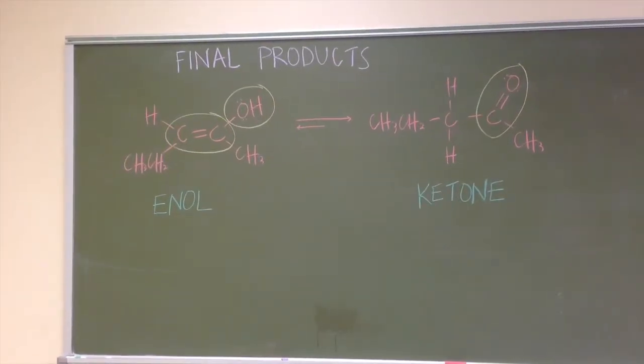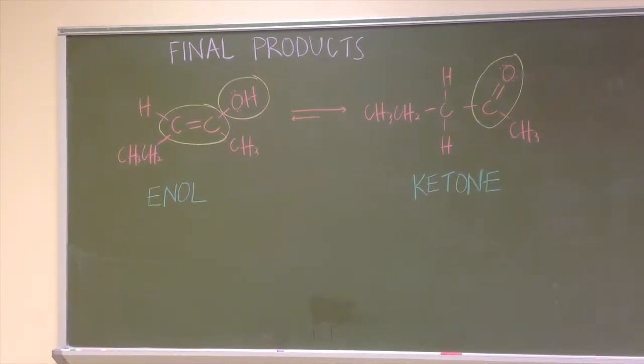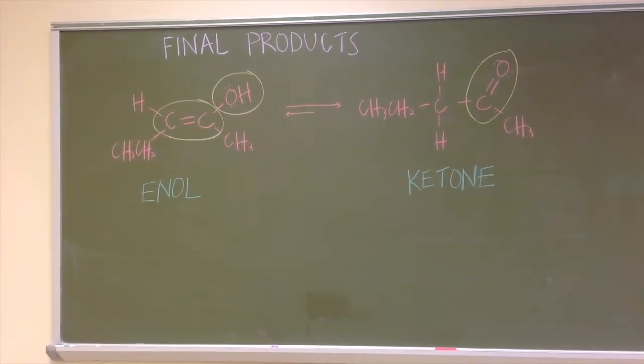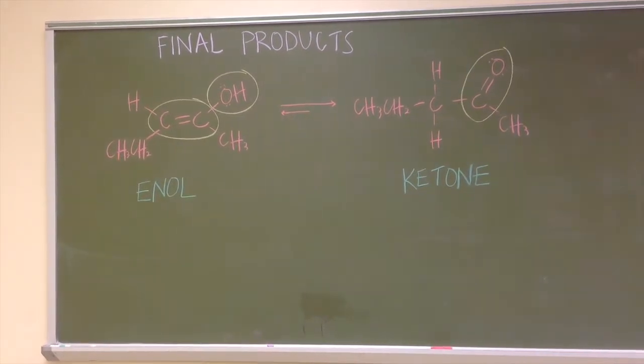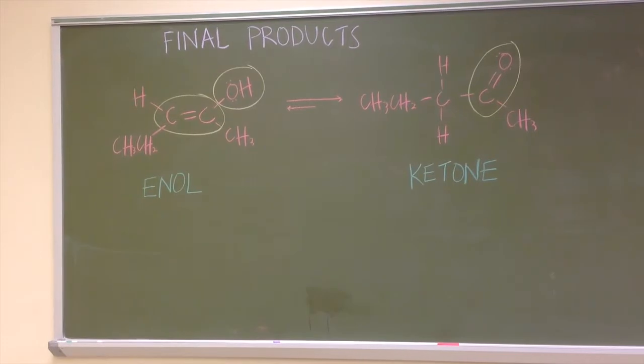Hydration of 2-pentine results in two products: an enol and a ketone, which are in equilibrium with each other. However, equilibrium favors the ketone largely because the CO double bond is much stronger than the carbon-carbon double bond.